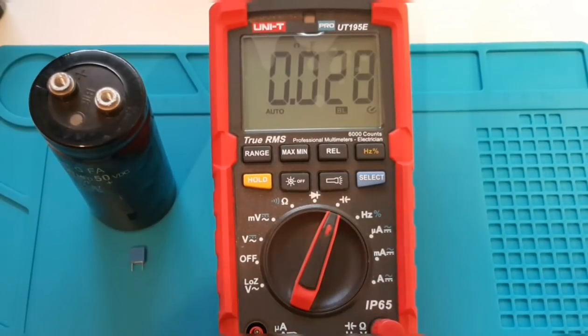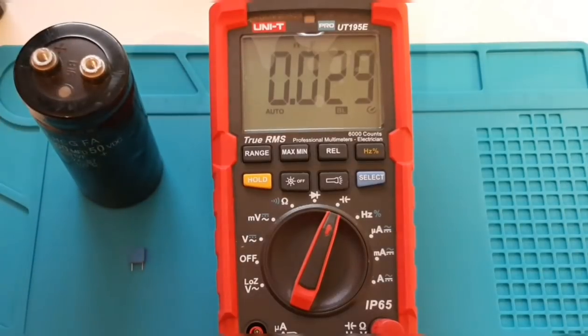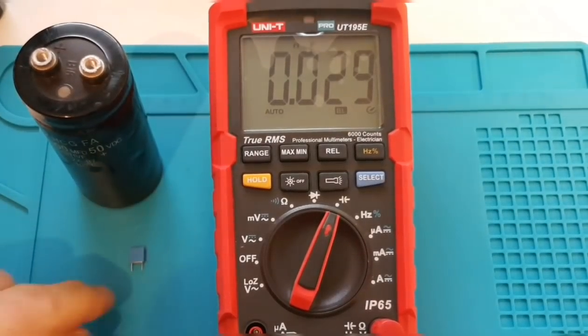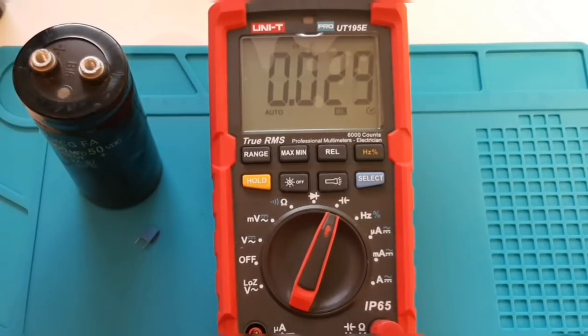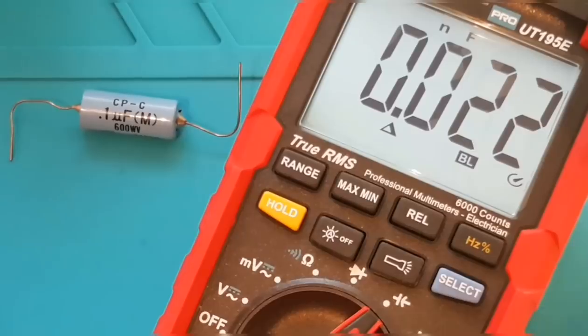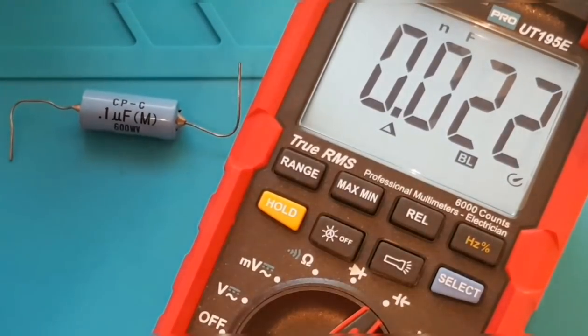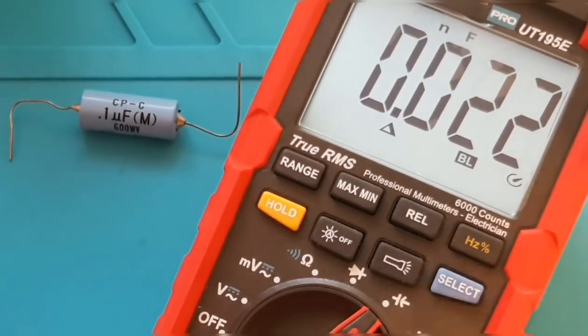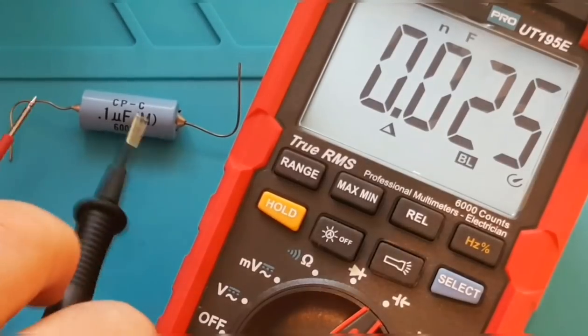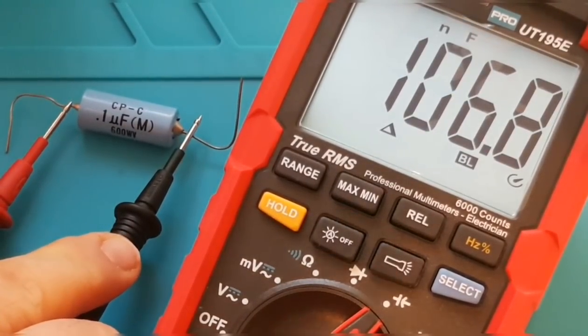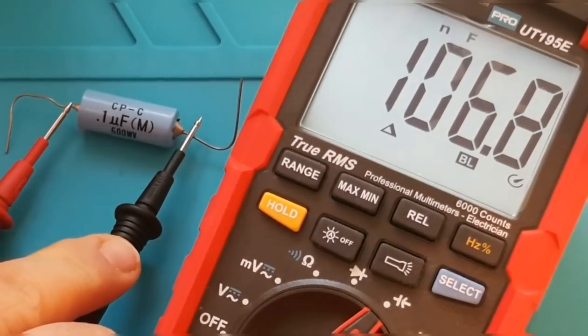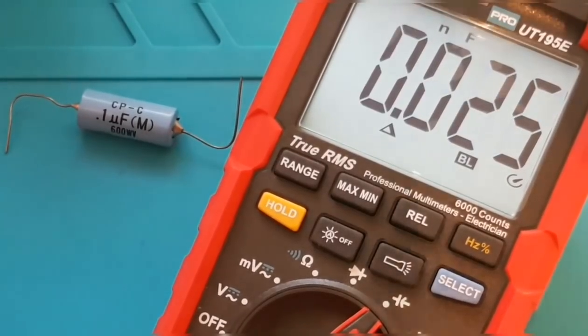Now I know not everybody measures these big capacitors. In fact, a lot of people do lots of Arduino work. And you're working with small, small caps. Here's another cap on the other end of the scale. This is a 0.1 microfarad cap. And let's measure this guy. Yep. Just over 100 nanofarad. So 106.8. So no problems there.